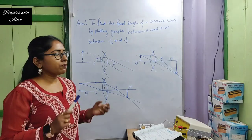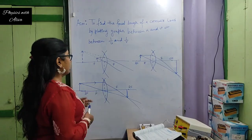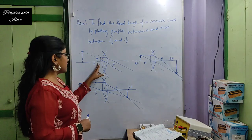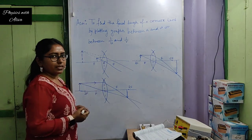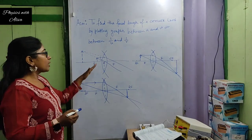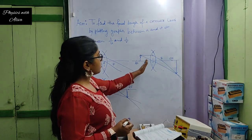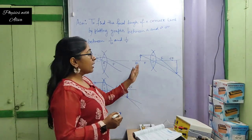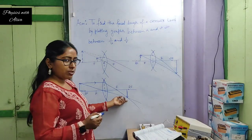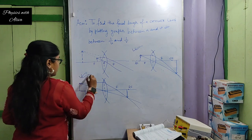u is the object distance and v is the image distance. This is the convex lens — a converging lens. If we place the object between the optical center and the focal length, we see a virtual, enlarged image on the same side as the object. If we place the object between f and 2f, we get a real, inverted image beyond 2f. If we place the object beyond 2f, we get a real, inverted image between f and 2f.